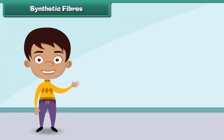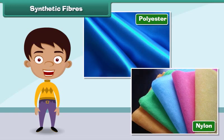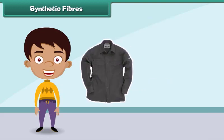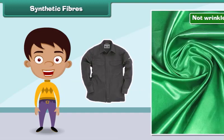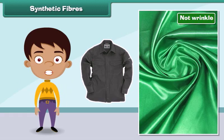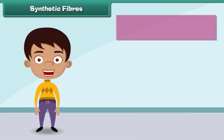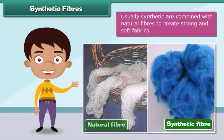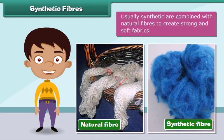Synthetic fibers are man-made. Nylon and polyester are examples of synthetic fibers. Fabric made from synthetic fibers is cheap, dries easily, and does not wrinkle. Usually, synthetic fibers are combined with natural fibers to create strong and soft fabrics.